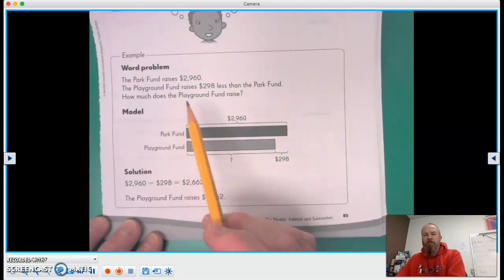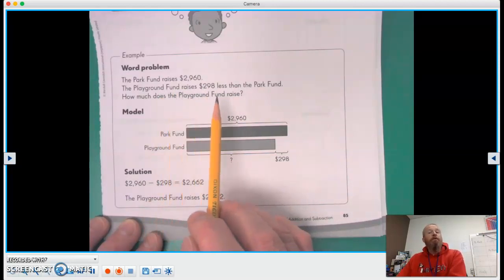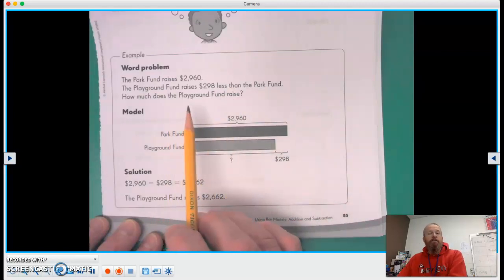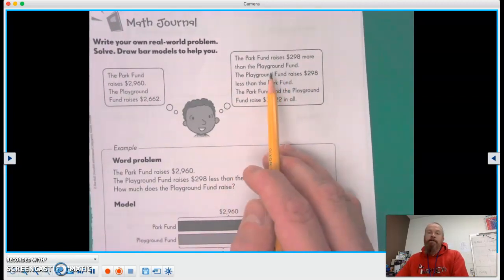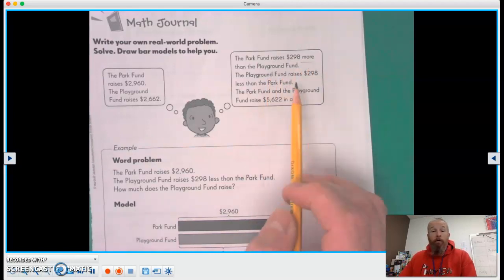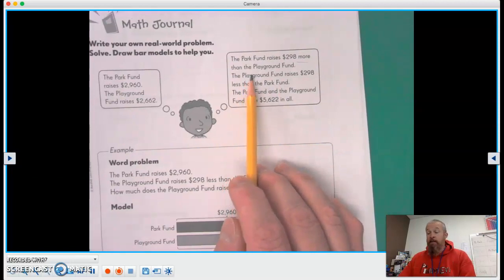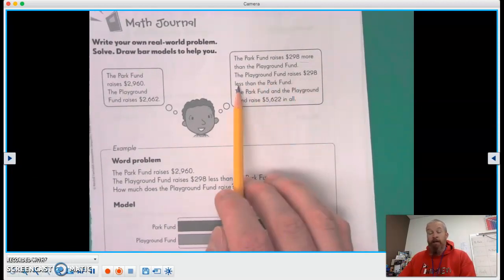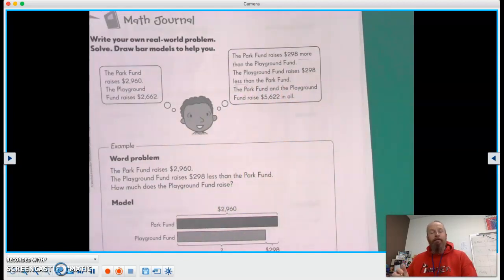You can see down here that they're setting up the problem and solving. So they use the information above and said the park fund raises $2,960, the playground fund raises $298 less than the park fund. How much does the playground fund raise? So they worded it a couple of different ways. They said the park fund raises $298 more than the playground fund, but then they also changed it around the other way. The playground fund raises $298 less than the park fund. They mean the same thing, right?